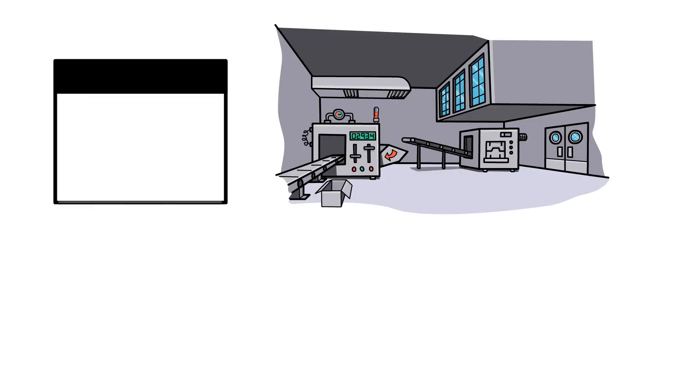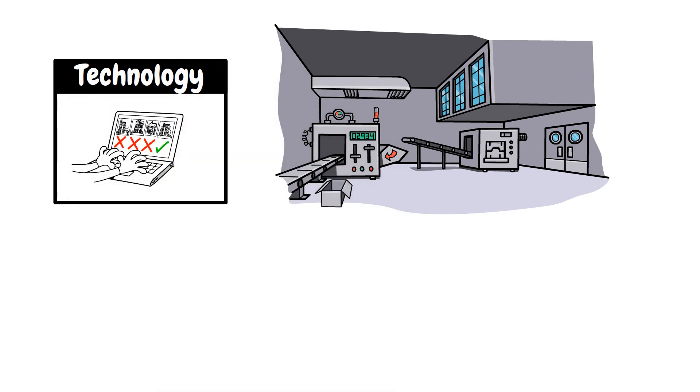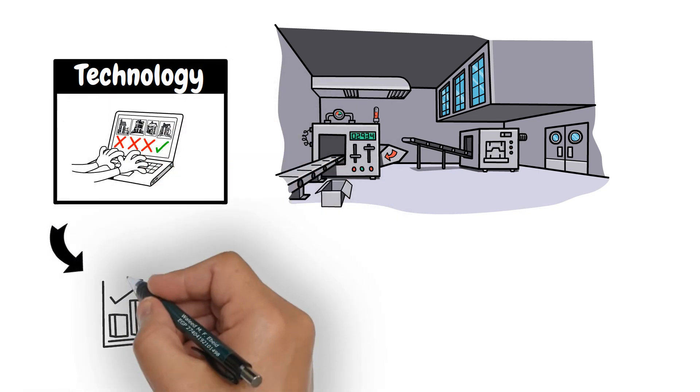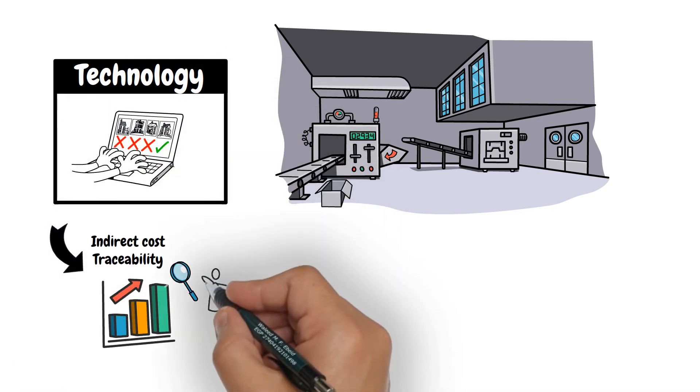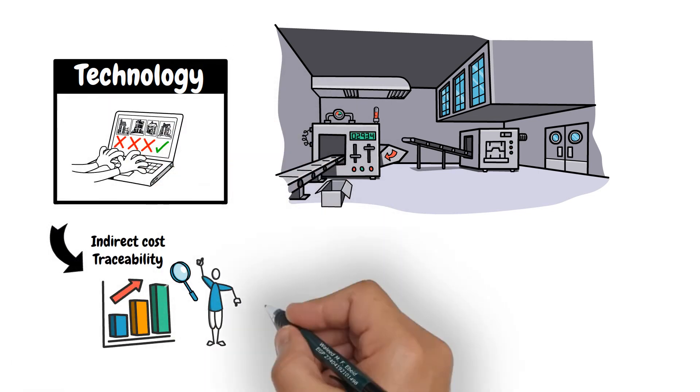Note that the level of technology implemented in some production facilities has made it easier to trace most of the indirect costs to cost objects, and thus converted most of the indirect costs to direct ones.